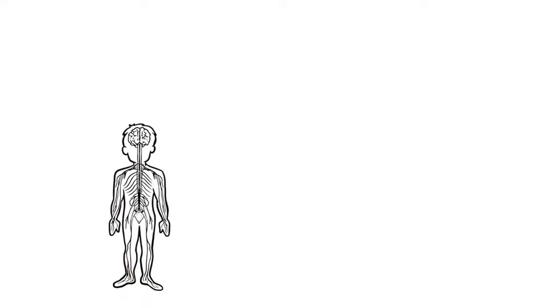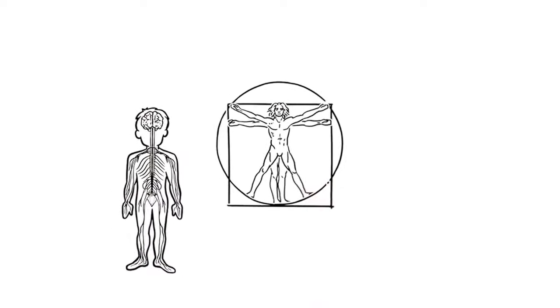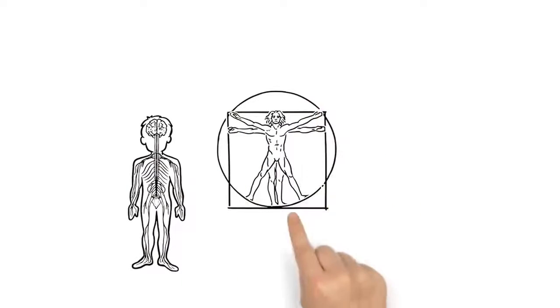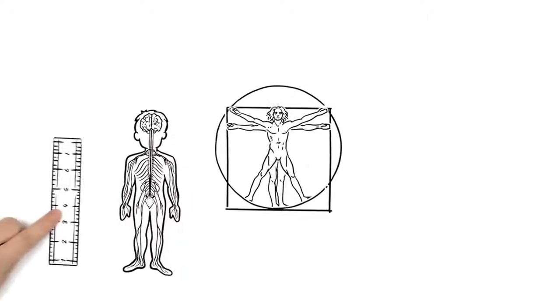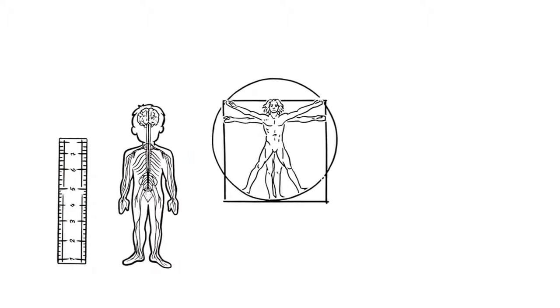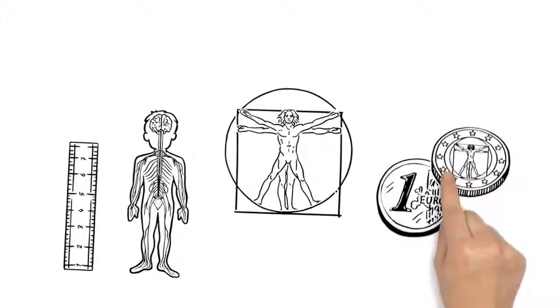Anatomy is also the focus of the Vitruvian man, a human being standing in the center of a circle and a square. Leonardo's groundbreaking drawing depicts the ideal human body measurements and proportions. Today, the drawing is featured on Italy's one euro coin.